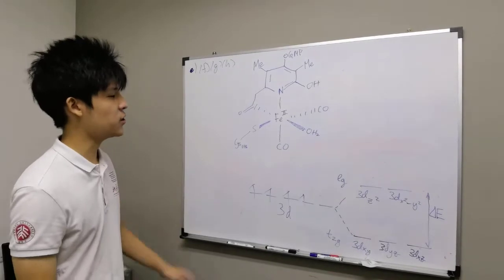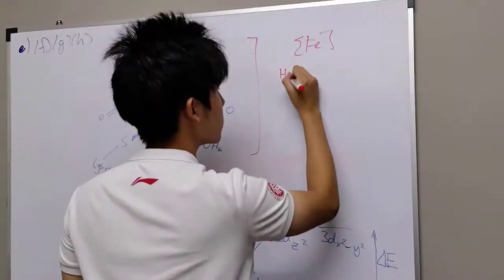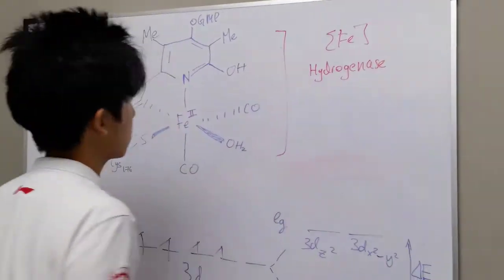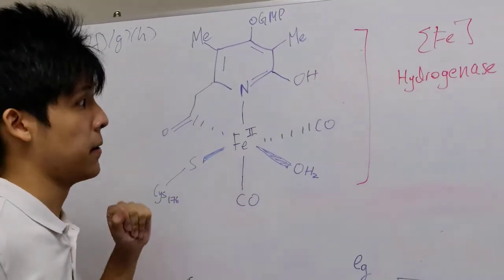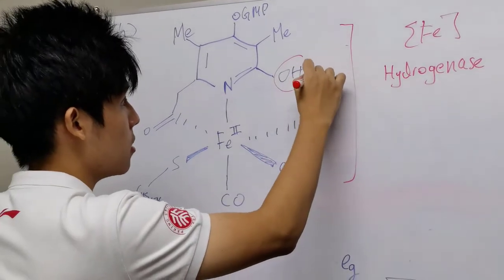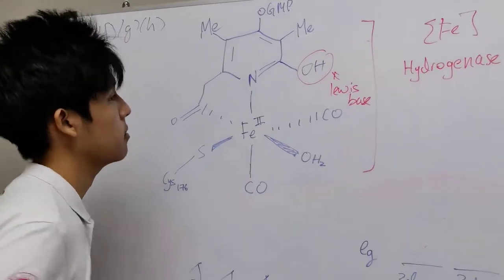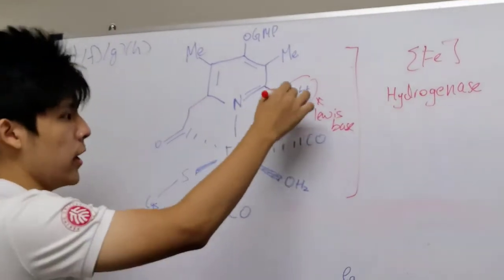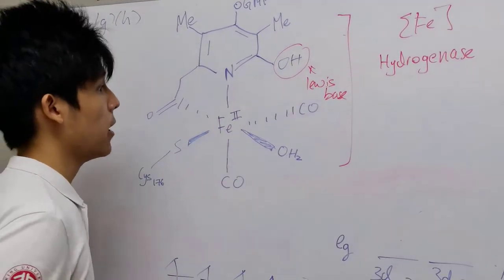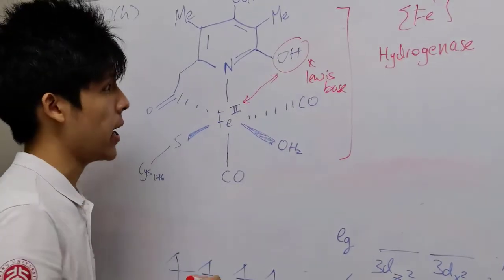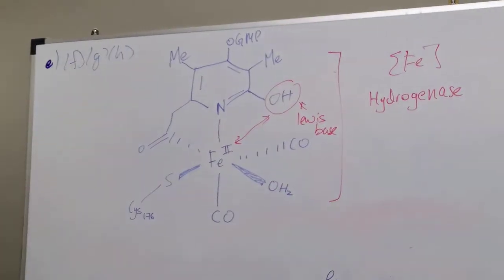Now we can turn our attention to iron hydrogenase. This is the main reacting moiety. We are first asked why this OH and this iron-2 center form a frustrated Lewis pair. Basically, OH is a Lewis base because it has lone pairs, and iron-2 is a Lewis acid. They form a frustrated Lewis pair because this OH and this iron-2 are actually bonded to the same scaffold and are pointing away from each other. This large distance physically prevents a strong coordination bond from forming between the OH and the iron-2 center. Therefore, they form a frustrated Lewis pair.